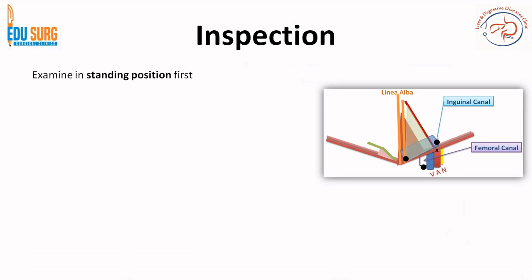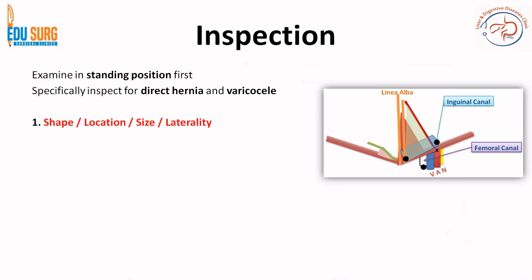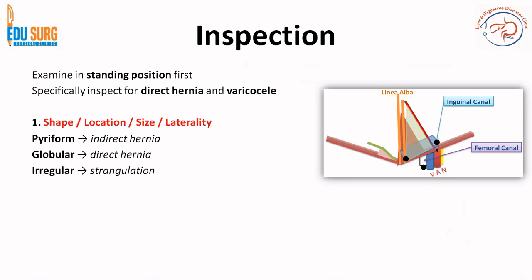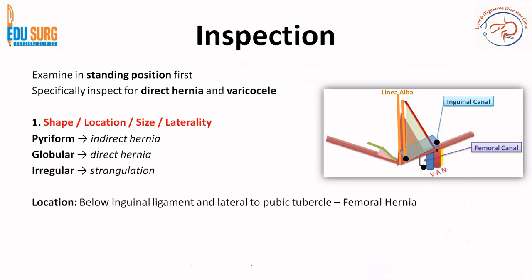An important point: examine in the standing position first, or you may miss small hernias. Specifically inspect for direct hernia and varicocele. When looking at the swelling, all points as discussed in swelling examination need to be covered. In this video we are focusing more on the hernia point of view. Shape, location, size, and laterality — left-sided or right-sided. Pyriform shape is indirect hernia, globular shape is direct hernia.